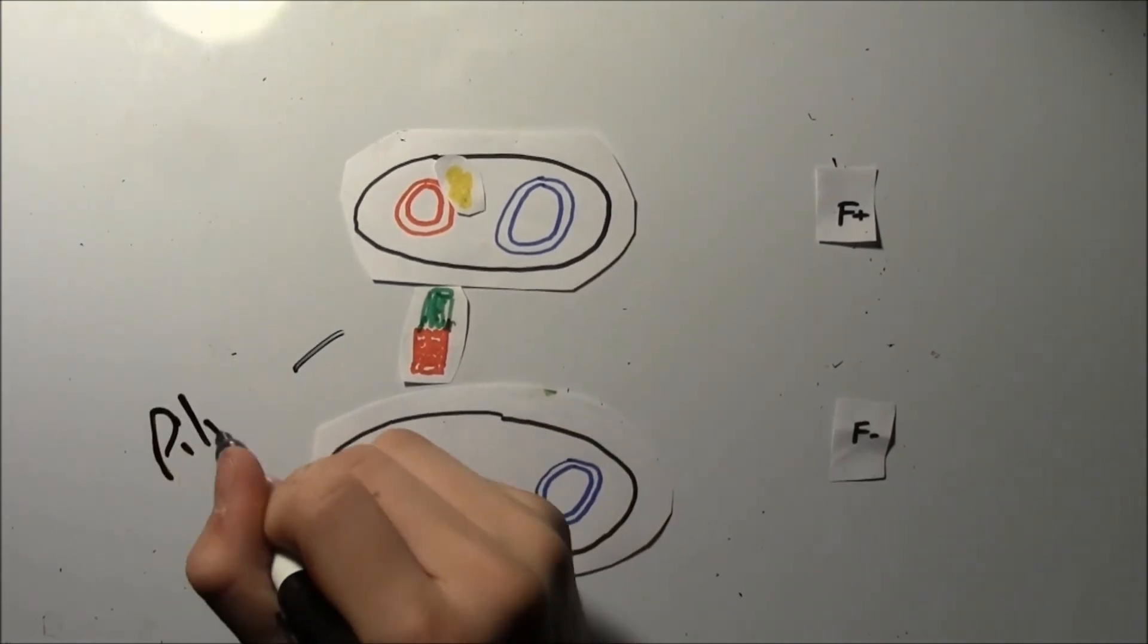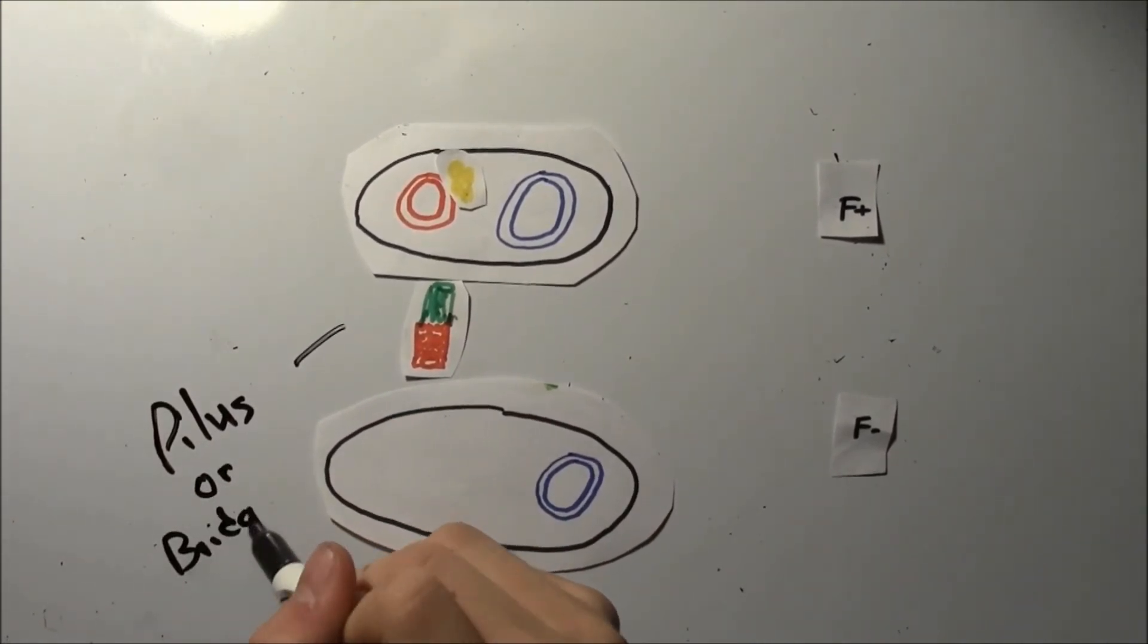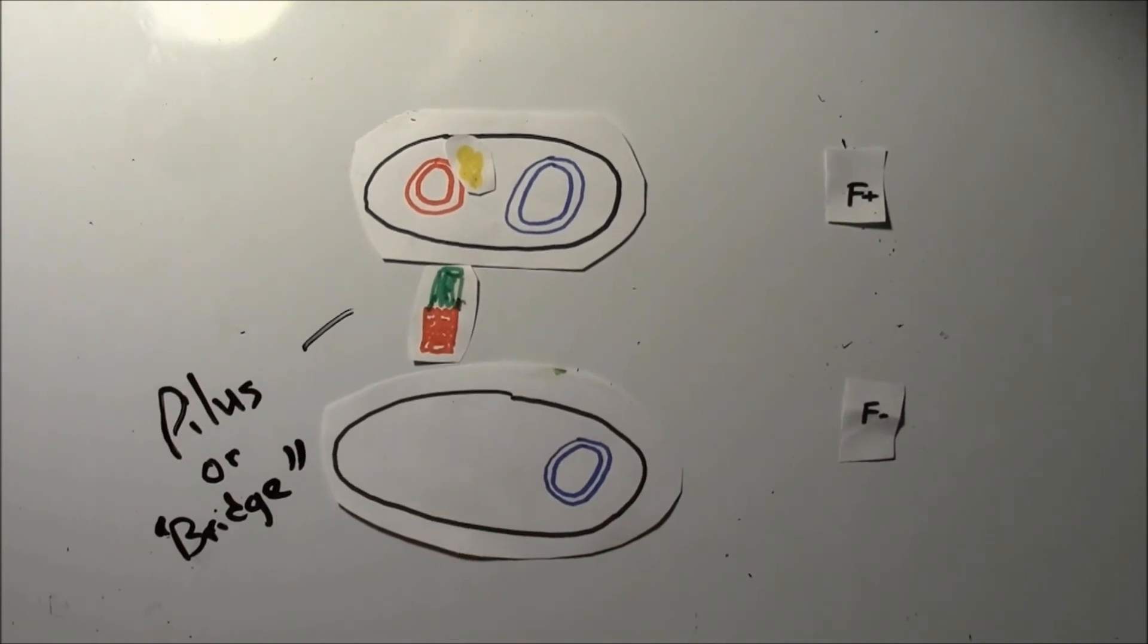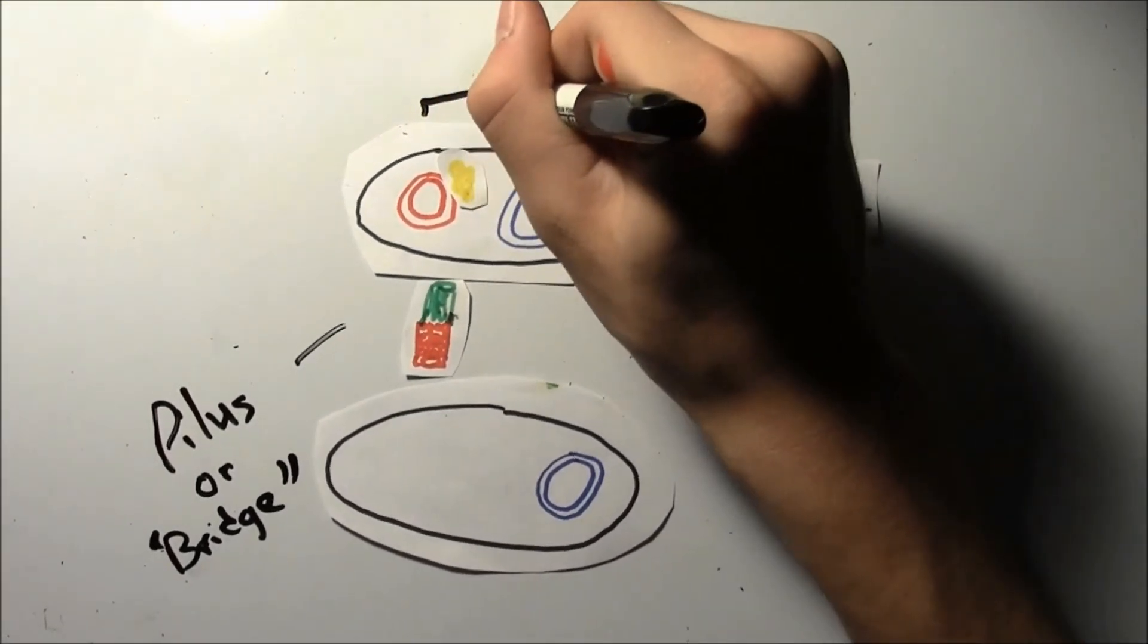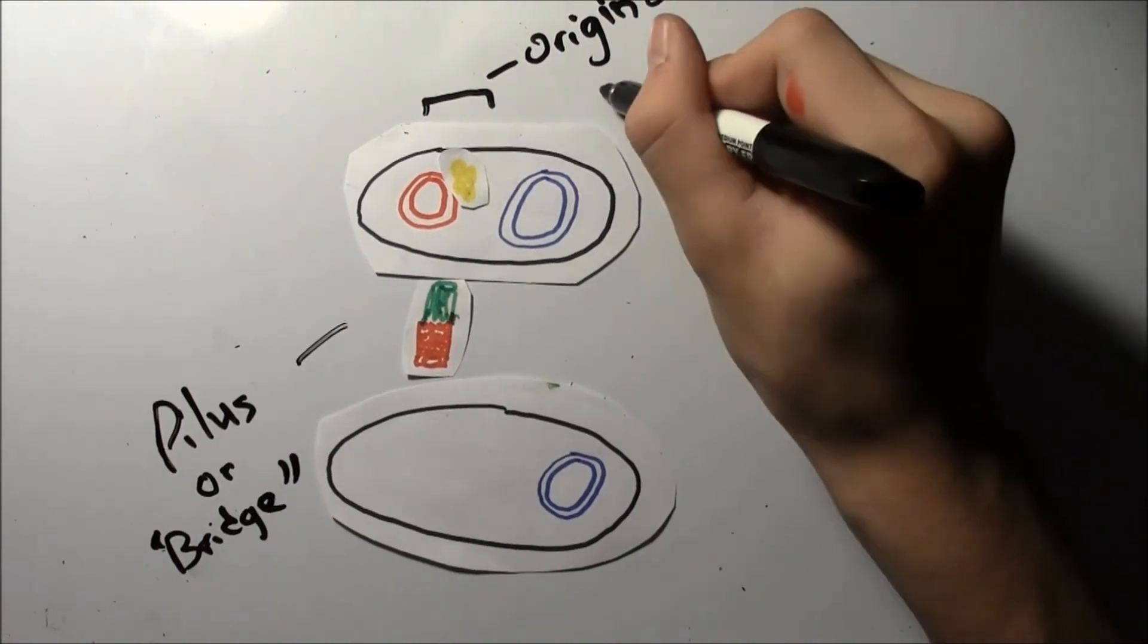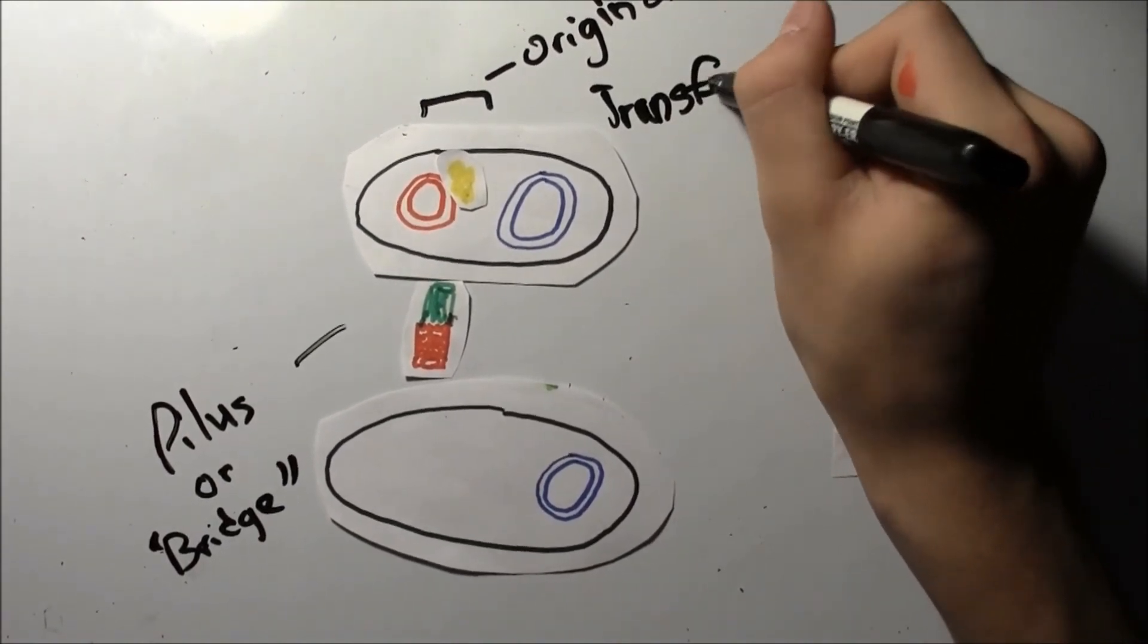A sort of bridge between the two bacterial cells is formed, which is called a pilus. At the same time as the formation of the pilus, a protein assembly called a relaxosome, which is shown in yellow, opens up the F-factor at the origin of transfer in the donor cell.